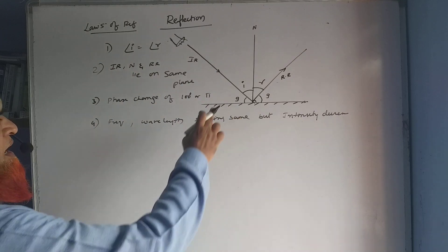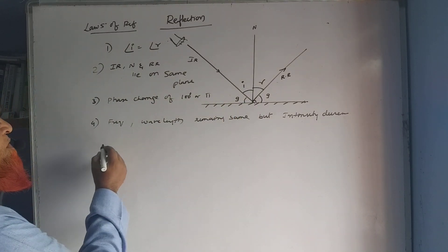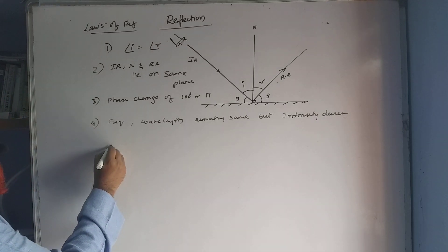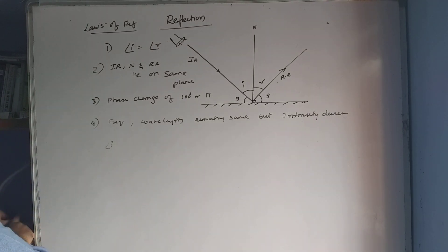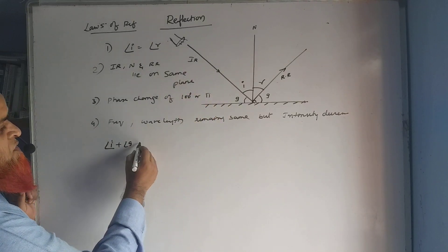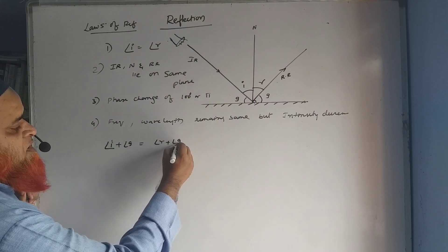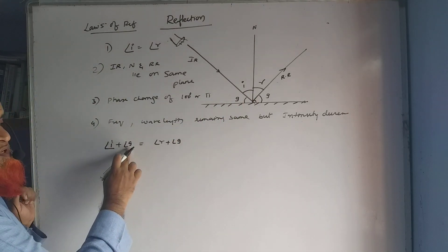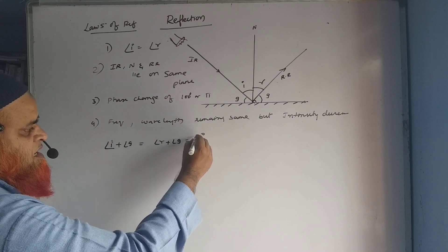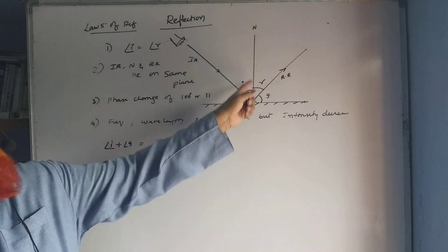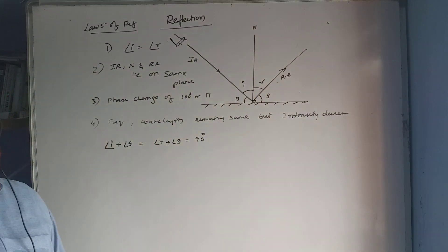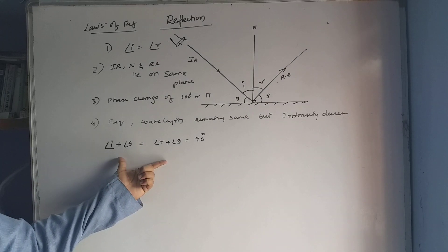Regarding the glancing angle: the two glancing angles on either side are equal. The angle of incidence plus the glancing angle on one side equals the angle of reflection plus the glancing angle on the other side. The angle of reflection plus the glancing angle equals 90 degrees because the normal makes 90 degrees with the mirror. The sum of both pairs is 90 degrees.